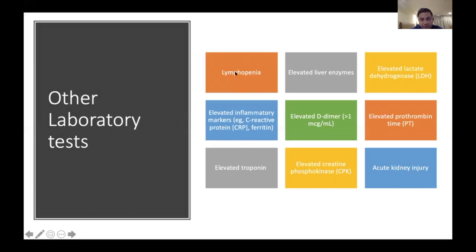Other laboratory tests that should be sent — and can predict higher mortality risk — include lymphocyte count (lymphopenia is associated with higher mortality), liver function tests (elevated liver enzymes correlate with worse outcomes), elevated LDH, elevated inflammatory markers such as CRP and ferritin, elevated D-dimer above 1 microgram per mL, elevated prothrombin time, troponin, CPK, and elevated creatinine.